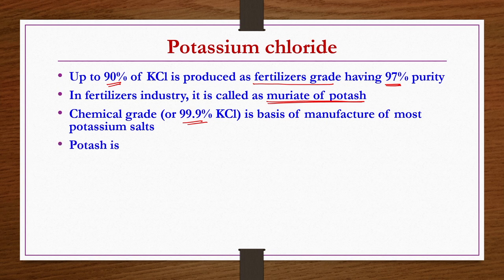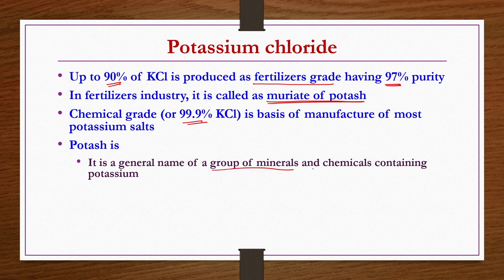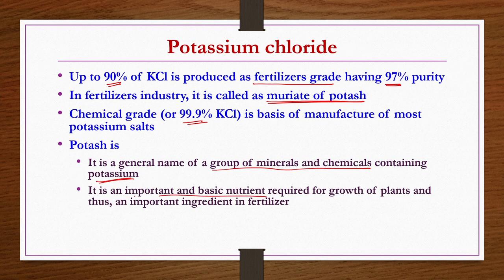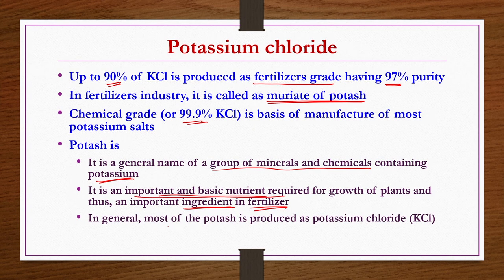What is potash? Potash is a general name given to a group of minerals and chemicals containing potassium. In fertilizer industries it is called muriate of potash, but potash in general refers to any group of potassium-containing minerals or chemicals. It is a very important and basic nutrient requirement for plant growth and thus a very important ingredient in fertilizer industries. Most potash is produced as potassium chloride since it is primarily produced for fertilizer purposes.